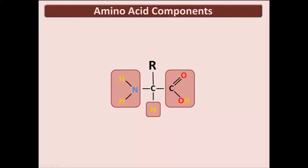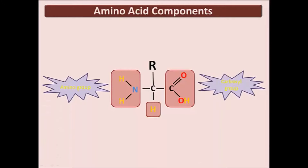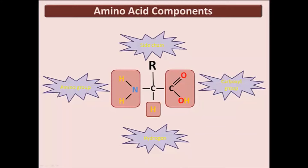Amino acids all have similar features. 19 of the 20 amino acids have a central carbon that is asymmetric, called the alpha carbon. Asymmetric carbons have four different groups of atoms coming off of them. Amino acids will all have three of these groups the same: an amino group, a carboxyl group, and a hydrogen molecule. The last group coming off the asymmetric carbon is the variable side chain.